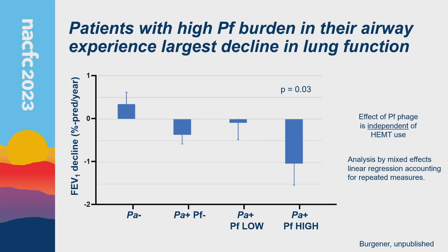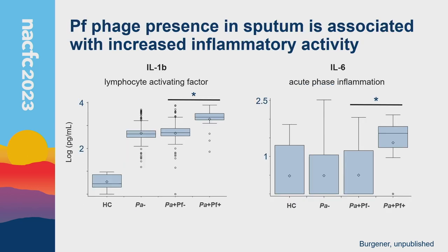Looking at FEV1 decline — percent predicted per year — pseudomonas-negative patients actually gained a little lung function, pseudomonas-positive PF-negative patients lost a little, and patients with high PF levels (more than two logs of PF in relation to Pseudomonas) had significantly higher lung function decline over time. This effect was independent of modulator use. Looking at sputum cytokines, IL-1β was significantly elevated in PF-positive patients compared to the other two CF groups. IL-6 was also elevated in PF-positive versus PF-negative.